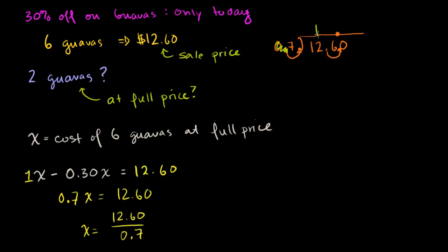7 goes into 12 one time. 1 times 7 is 7. 12 minus 7 is 5. Bring down the 6. 7 goes into 56 eight times. 8 times 7 is 56. And then we have no remainder. So it's 18, and there's nothing behind the decimal point. So it's 18, in our case $18.